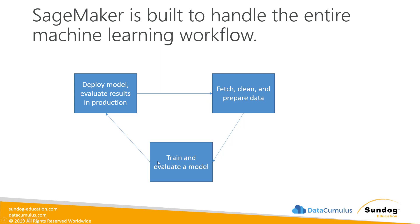You take that new data, train your model again, deploy it again, take in more data, train again, deploy again — and hopefully things just keep getting better and better over time. SageMaker allows you to manage all of this. It will spin up training instances to make your training happen at large scale, gives you notebooks where you can do your data preparation, and will spin up instances in EC2 to deploy your model as an endpoint waiting to make inferences in production.